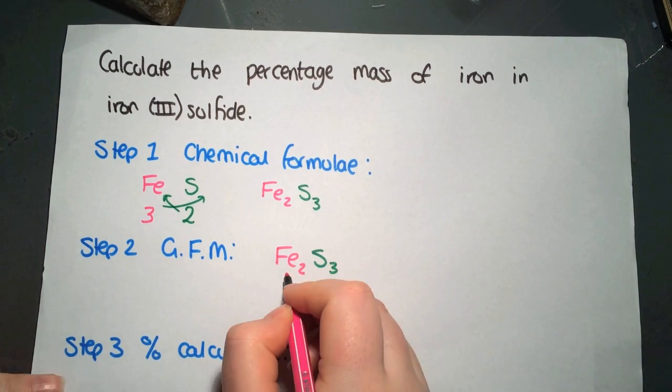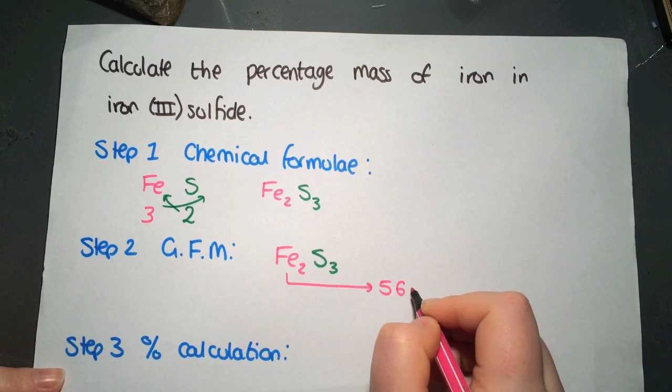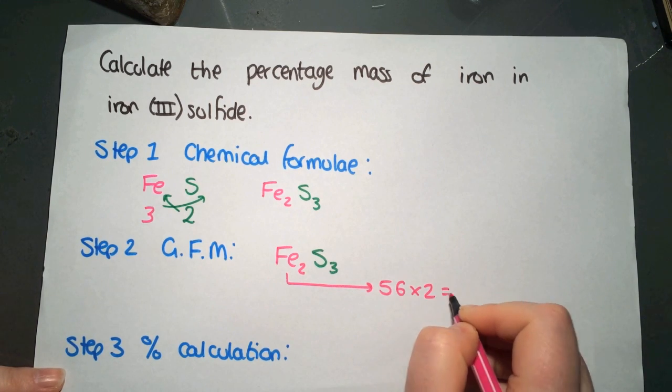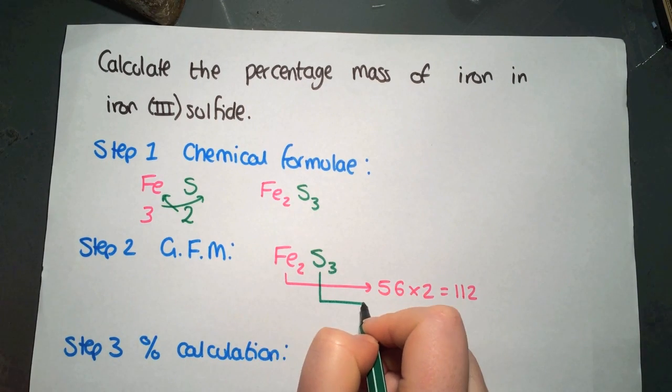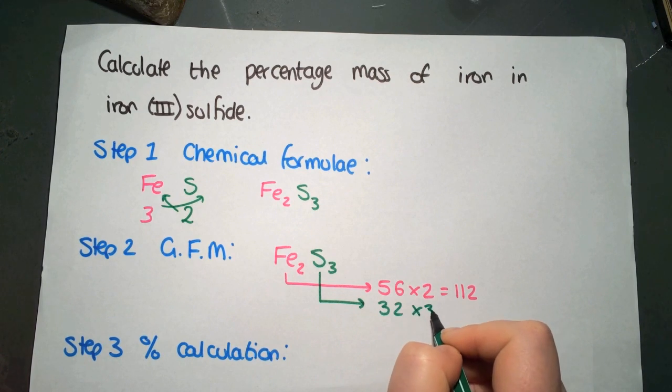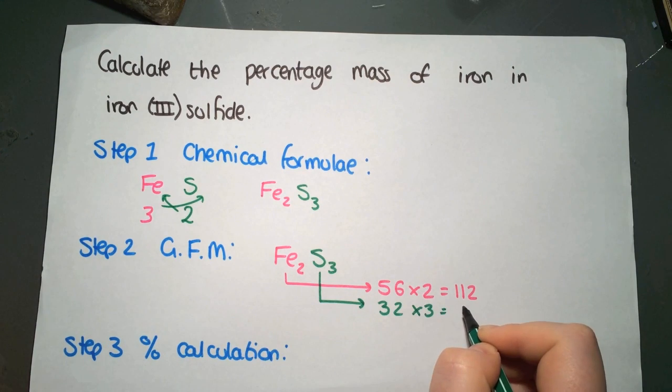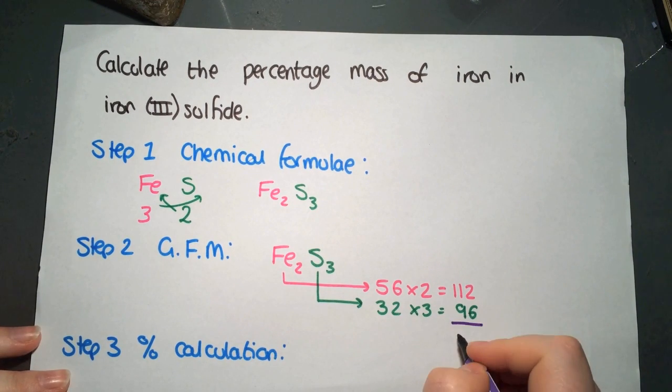So Fe has a relative atomic mass of 56. We're multiplying that by 2 to give us 112. Sulfur has a relative atomic mass of 32, and we're multiplying that by 3 to give us 96. That gives us a total gram formula mass of 208.